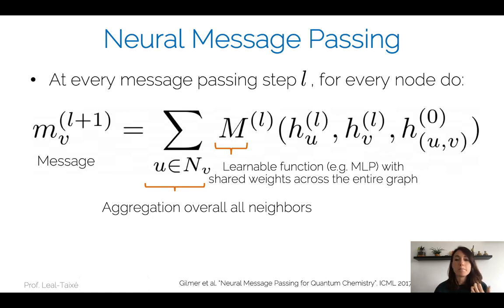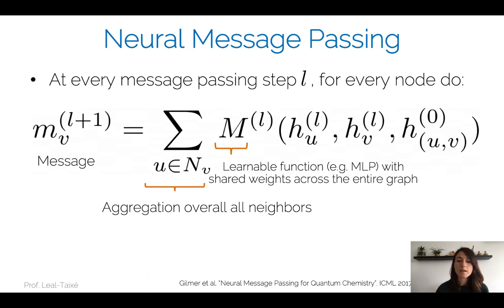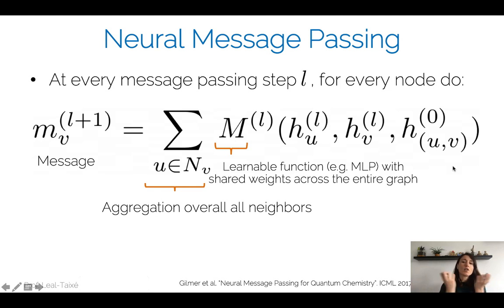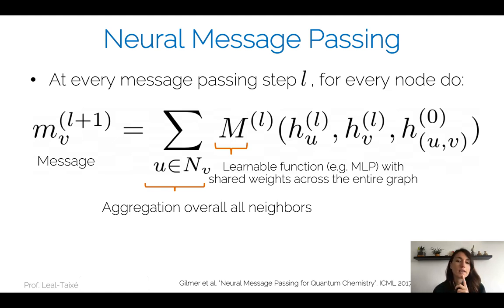Let's look in more detail at what exactly a neural message passing step is. First, we need to create a message for each node — in this case, the message for node V for step L plus one, moving from step L to step L plus one. I take node V and look at its neighbors U. I gather the information of the embedding of my neighbors, my own embedding, and the embedding of the edges. Then I put a learnable function on top — this can be, for example, an MLP, represented by the letter M. For all nodes in the graph, this function is going to be exactly the same.